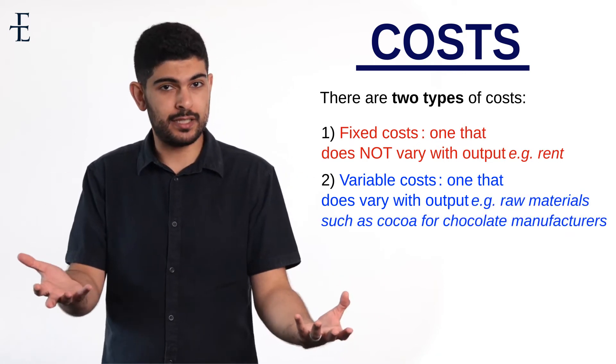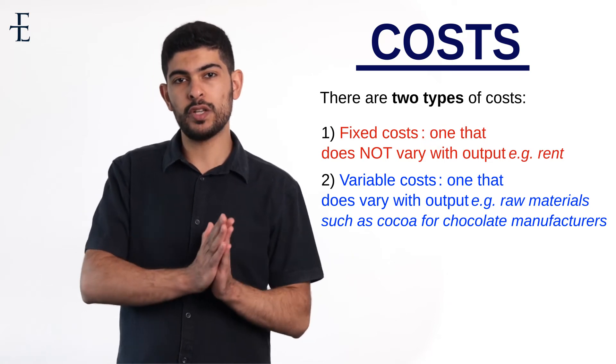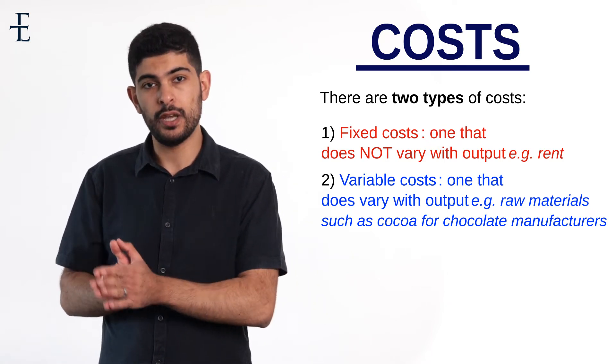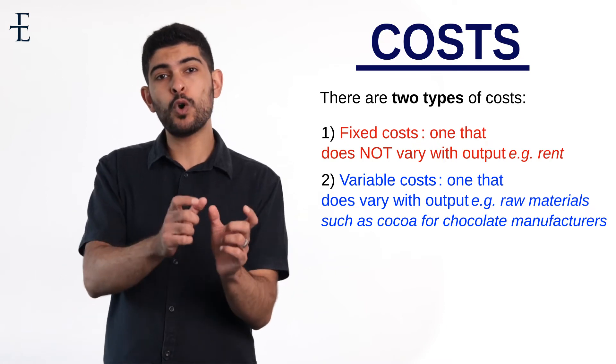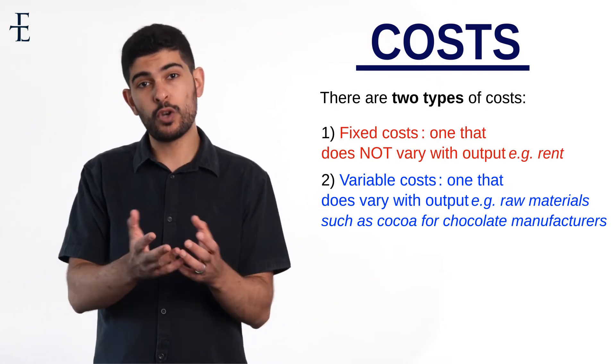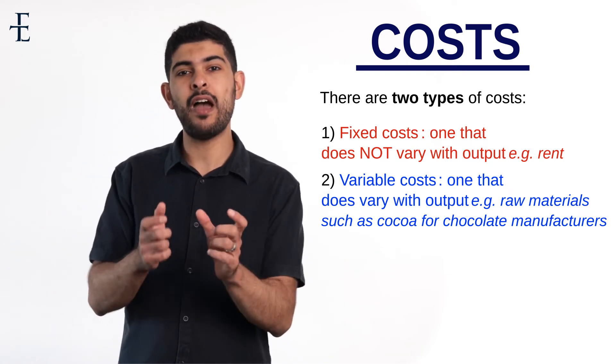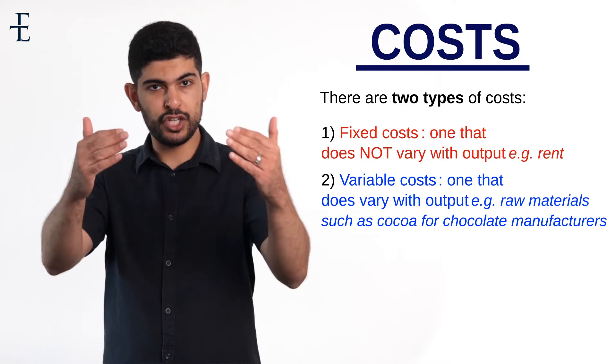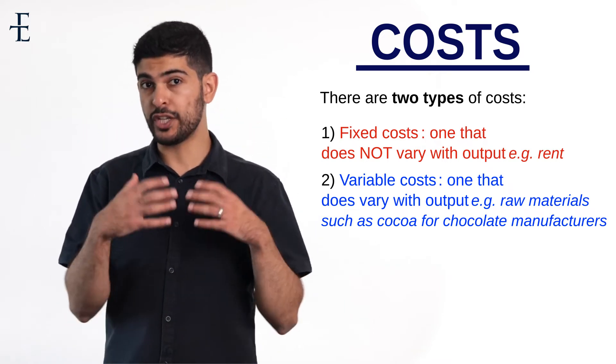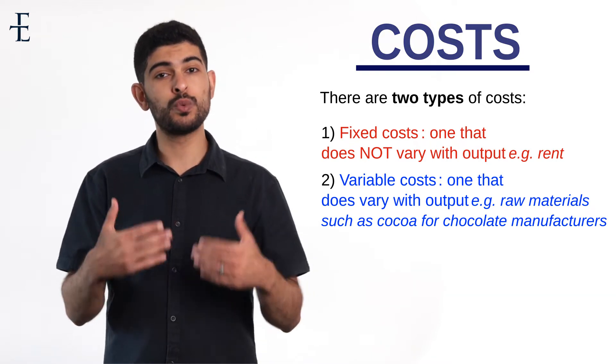The raw materials in essence. The way to remember in an exam if something is a variable cost is to ask a very simple question: do I need more of that thing to produce another unit of output? Do I need more cocoa to produce more chocolate? Yeah. Therefore, it is a variable cost. So the two definitions we need to capture are fixed cost, which does not vary with output, and variable cost, which does vary with output.